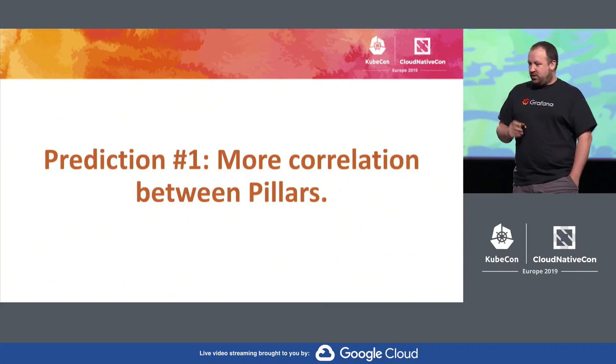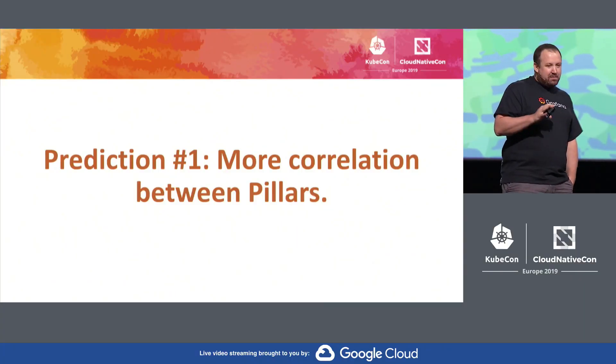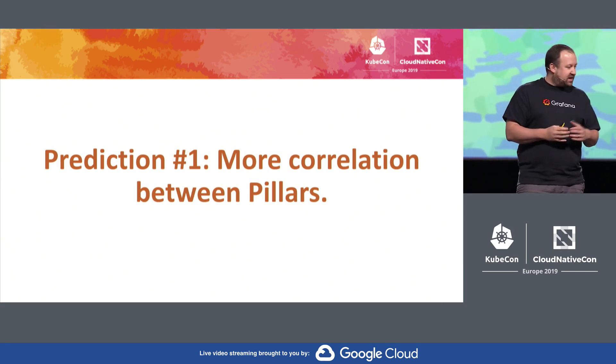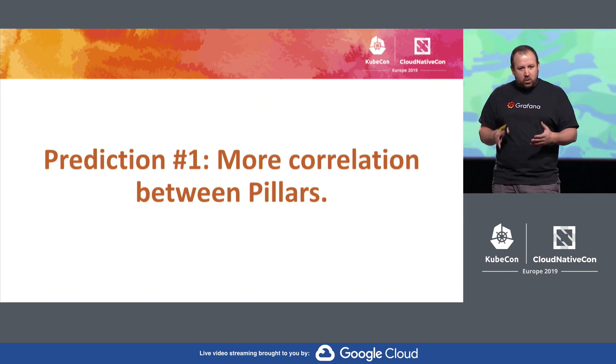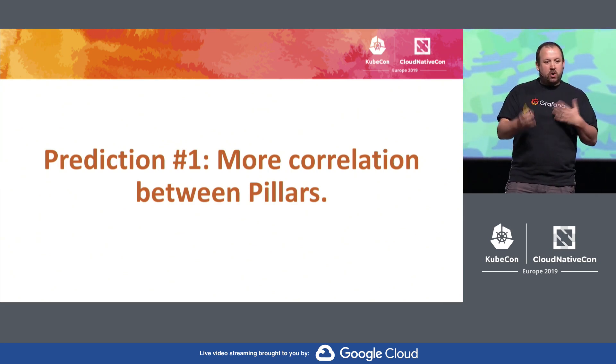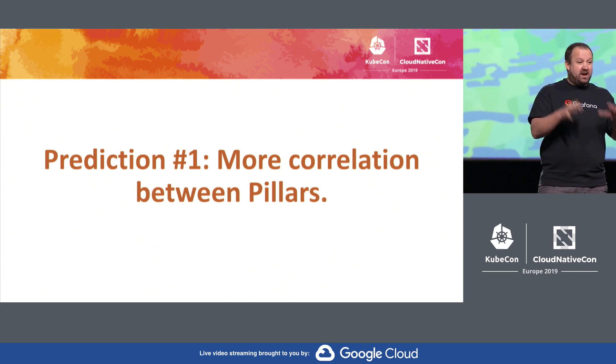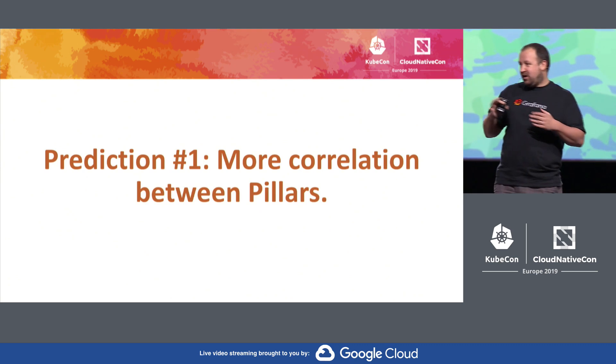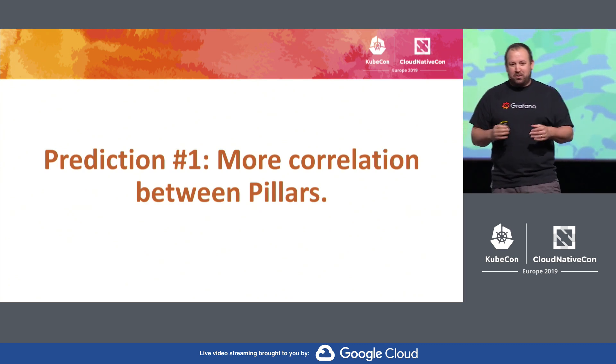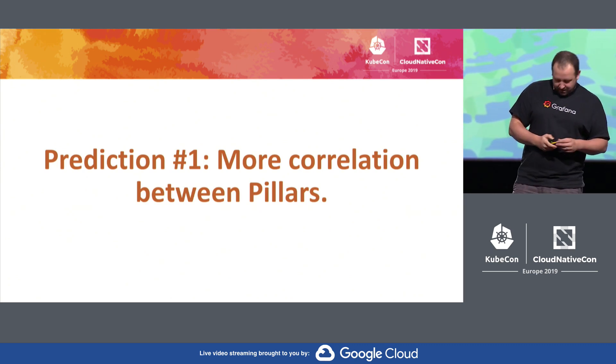So in this talk, Frederick and I are going to present three predictions. It's always a bit of a risky business giving predictions — we'll probably be wrong, but we're going to give it a go anyway. First prediction: there will be more correlation between the different pillars. We think this is the year when we're going to start breaking down the walls and seeing joined-up workflows. I want to talk about three examples of what you can do right now, and hopefully after the talk you can come to me with more examples.